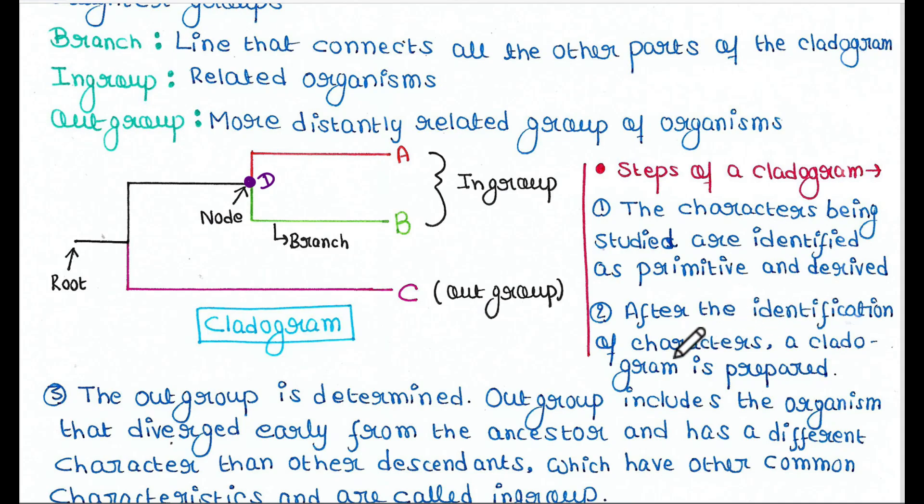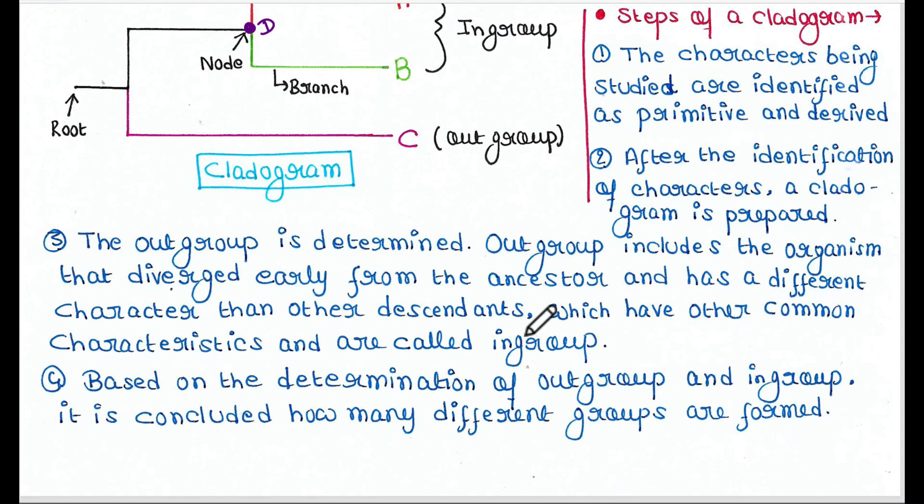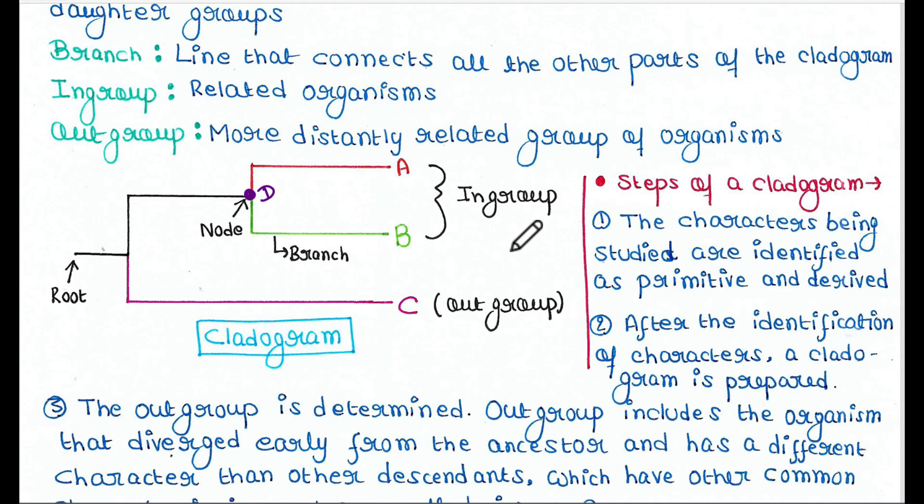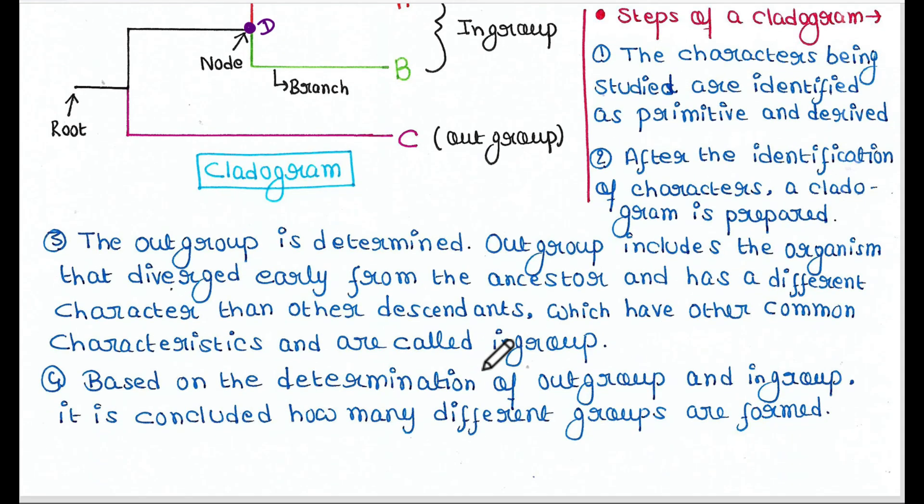First, its characters should be identified and then a cladogram is prepared. After the identification of characters, a cladogram is prepared. The out-group is determined. Out-group includes the organism that diverged early from the ancestor and has a different character than other descendants which have other common characteristics and are called in-groups.